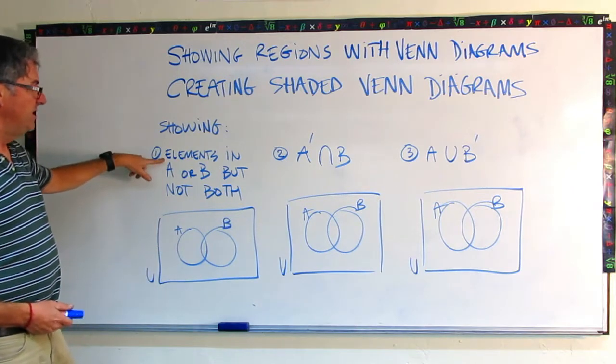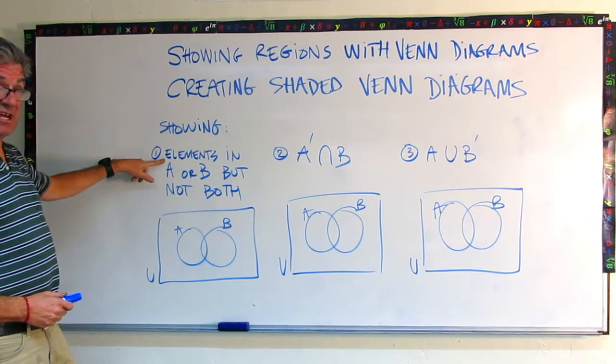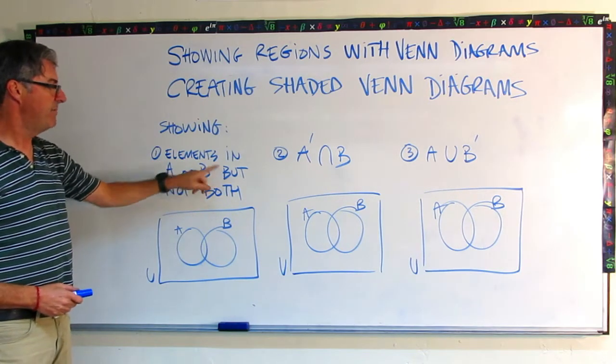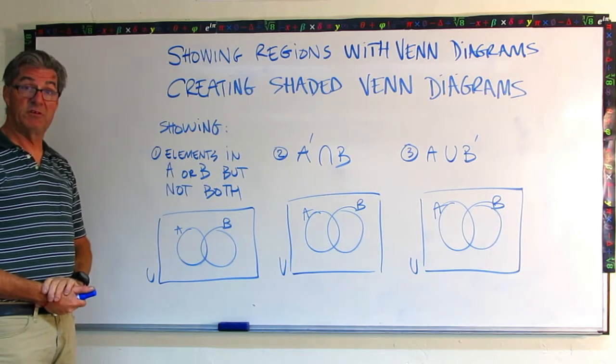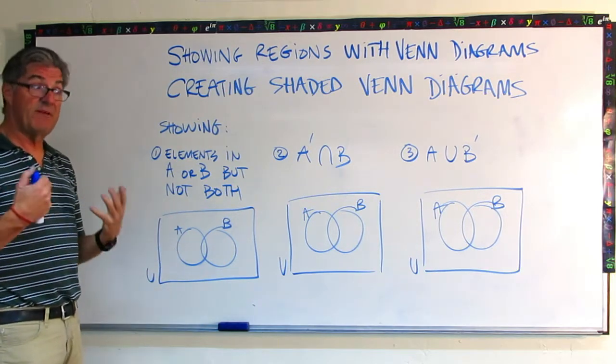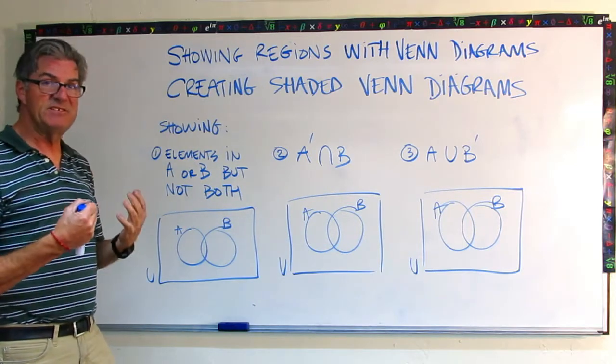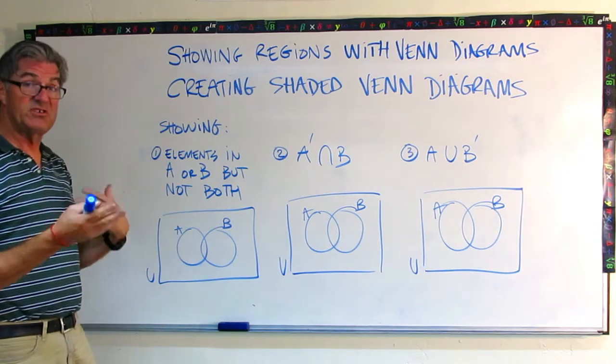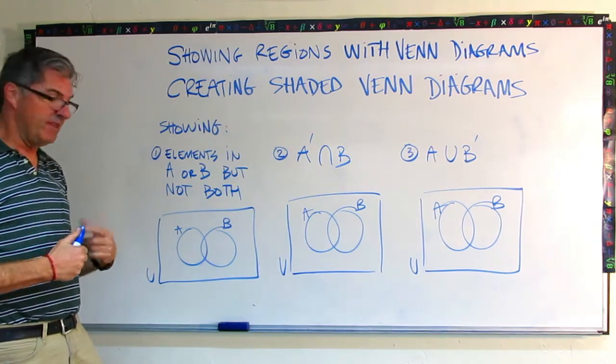So number one, let's create a shaded diagram showing elements in A or B, but not in both. So A or B, this is a little bit of logical thinking, A or B means that it could be either in A or in B. Either way is good. It just can't be in both of them.